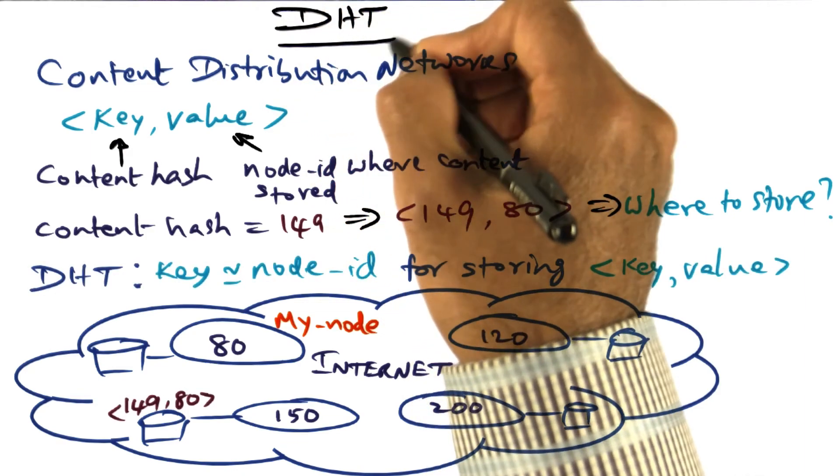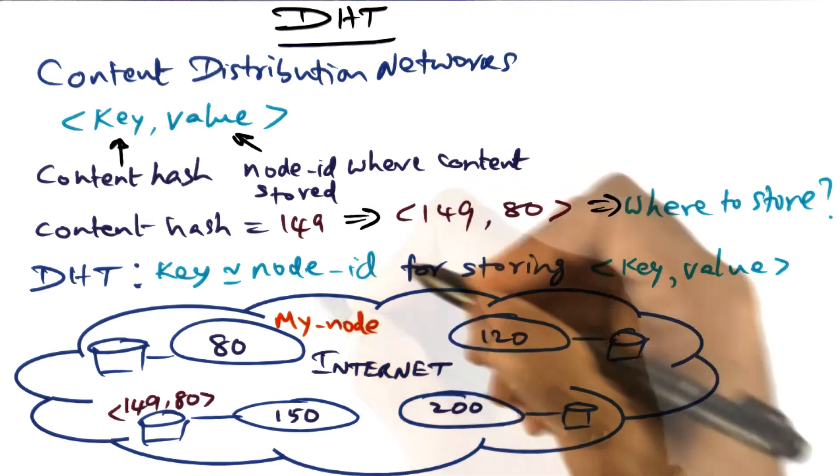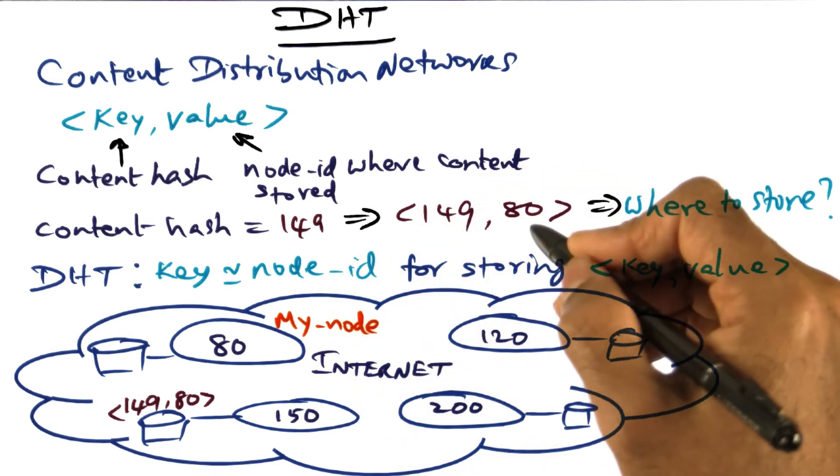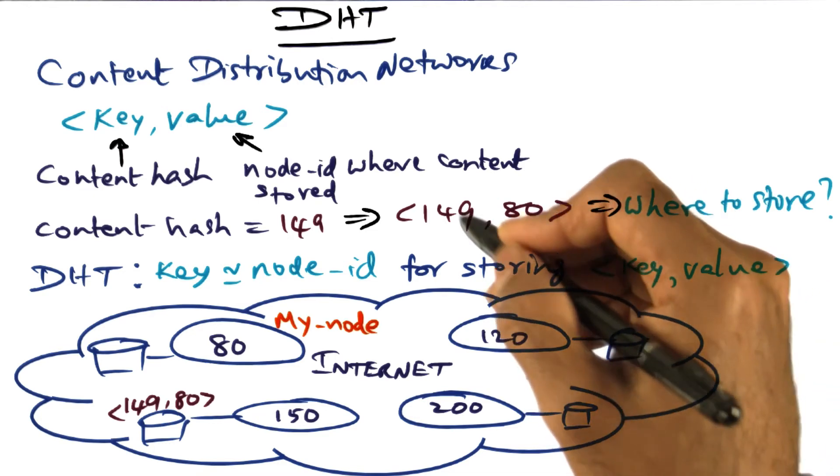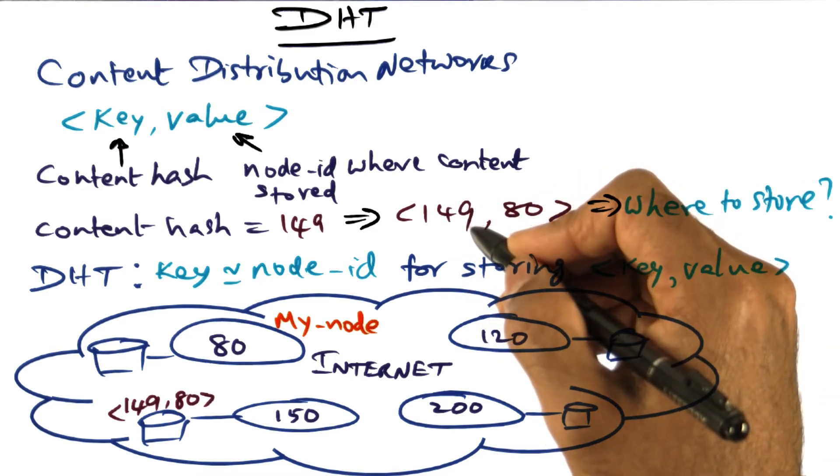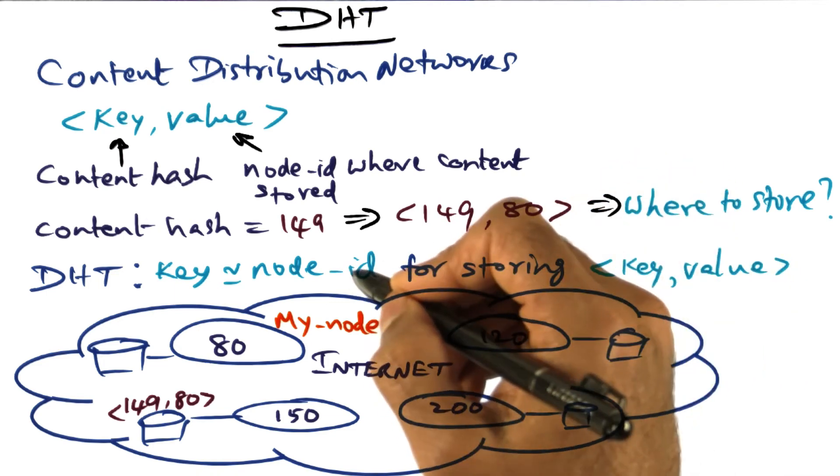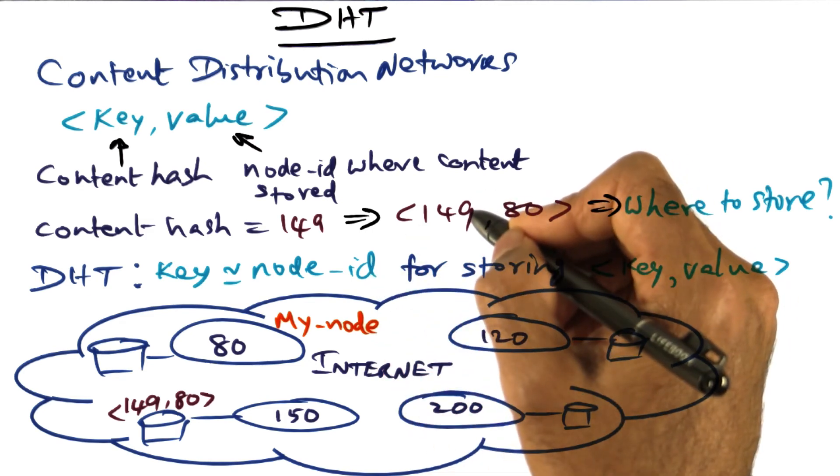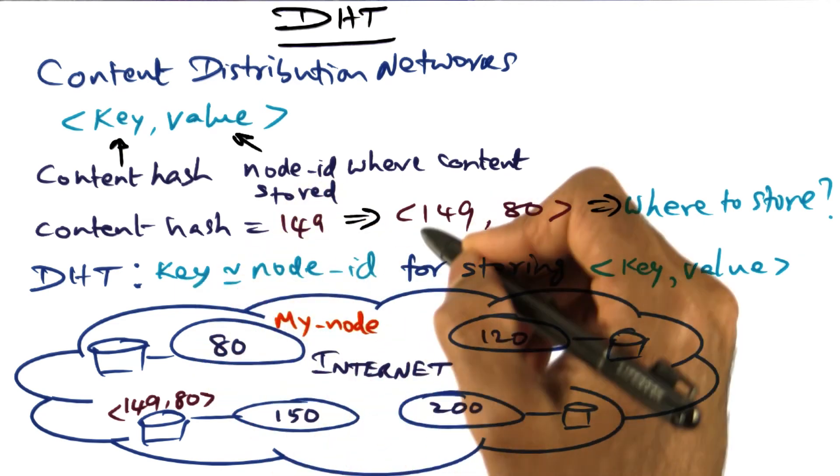And this is where the idea of DHT or distributed hash table comes into play. The idea is quite simple. Anyone who generates a key value pair has to find a location where they can store it so that intuitively, anybody looking for that particular key will be able to discover it. So if I want to store a key value pair, what I'm going to do is find a node whose ID is exactly the same as the key itself or if not, close enough to the key that I want to store.